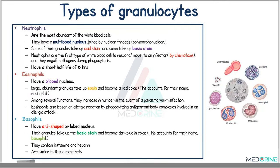Neutrophils are the most abundant of the white blood cells. They have a multilobed nucleus joined by nuclear threads — hence the term polymorphonuclear. Neutrophils are the first type of white blood cells to respond to an infection through a process known as chemotaxis. These neutrophils engulf pathogens during phagocytosis. However, neutrophils are known to have a short half-life of about six hours.